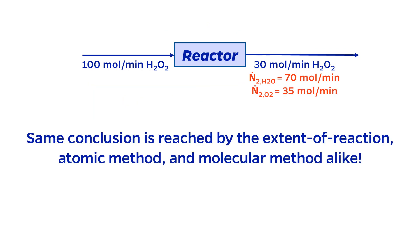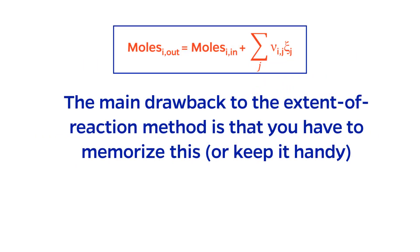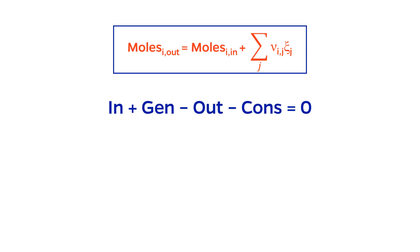Yet again, we can compare the results and see that they are identical to the other two methods. The main drawback of the extent of reaction method is that you either have to memorize the formula for the material balances or keep it handy. I'll share my method for remembering it. If you start with the steady state general balance equation, rearrange it to solve for output. Then imagine that the generation and consumption terms are grouped together. Comparing this to the balance, you can see that it is the same equation, if you imagine that the extent of reaction term represents the net generation or consumption.